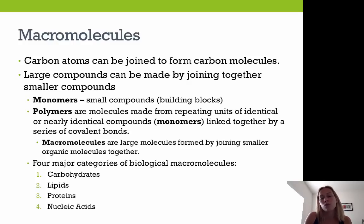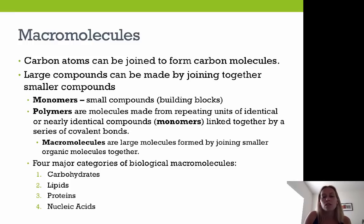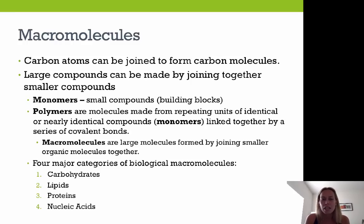Carbon atoms can be joined to form carbon molecules, and our macromolecules are carbon-based. Large compounds are made by joining smaller compounds together. Monomers are the small building-block compounds, and polymers are molecules made up of repeating units of identical or nearly identical monomers. Think of it like a puzzle — individual puzzle pieces are your monomers, and the completed puzzle is your polymer.